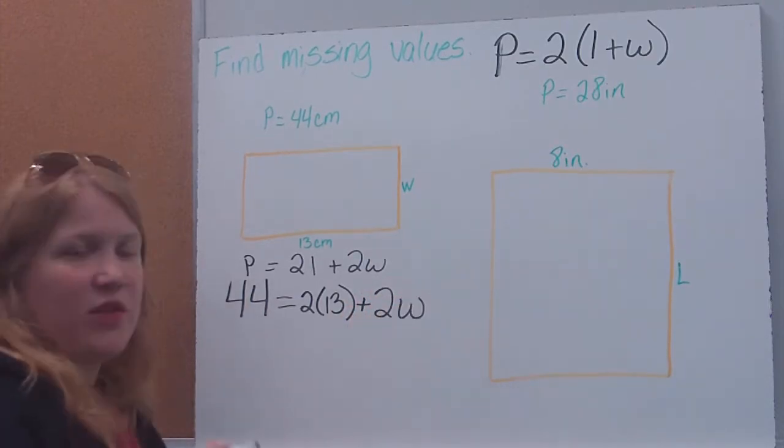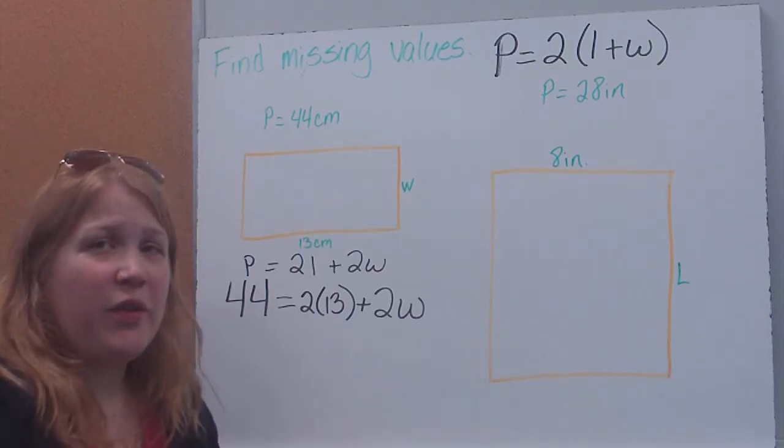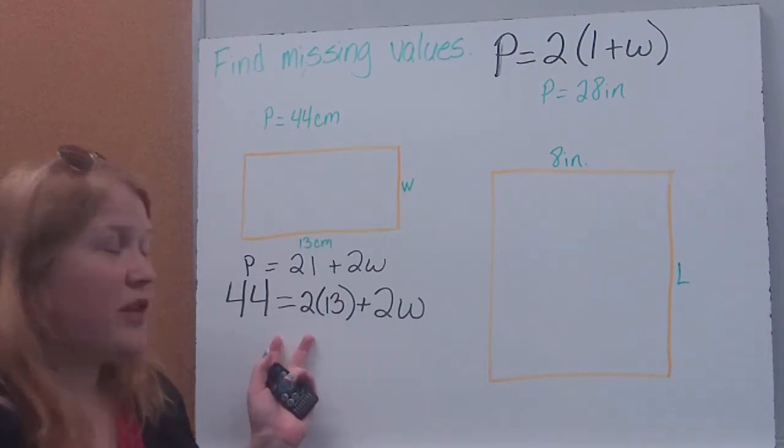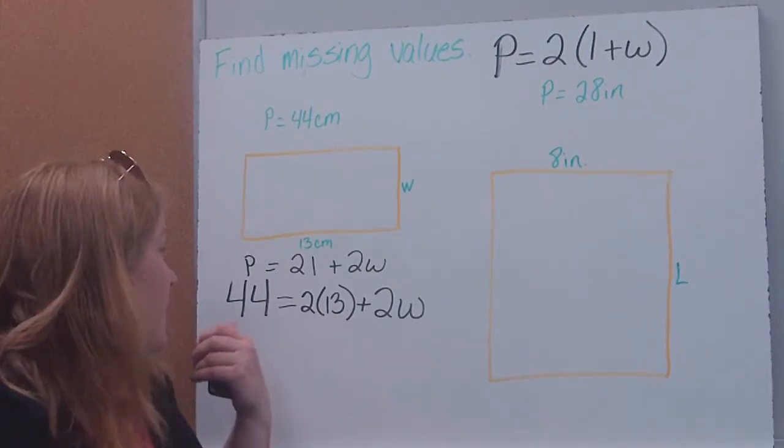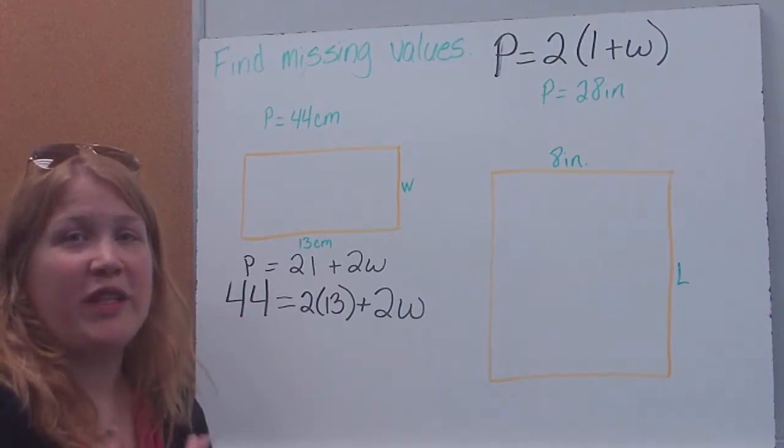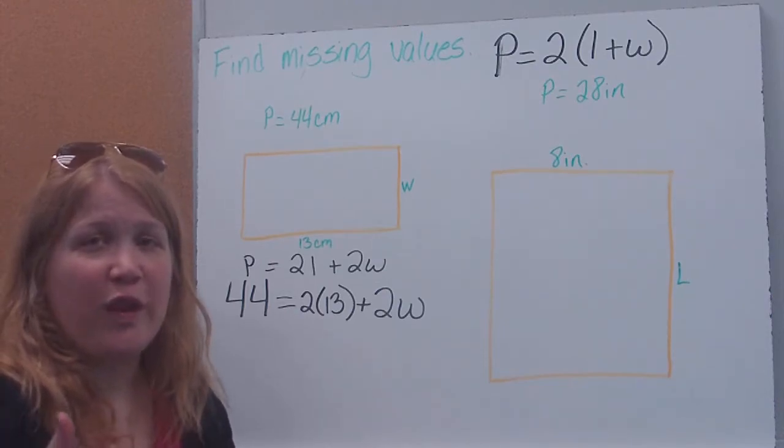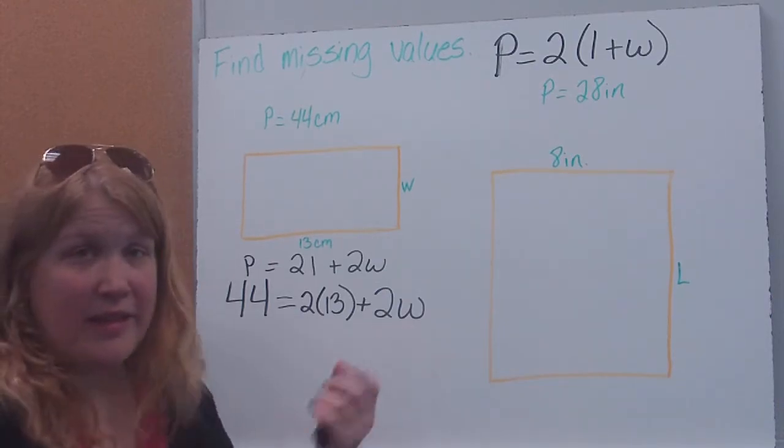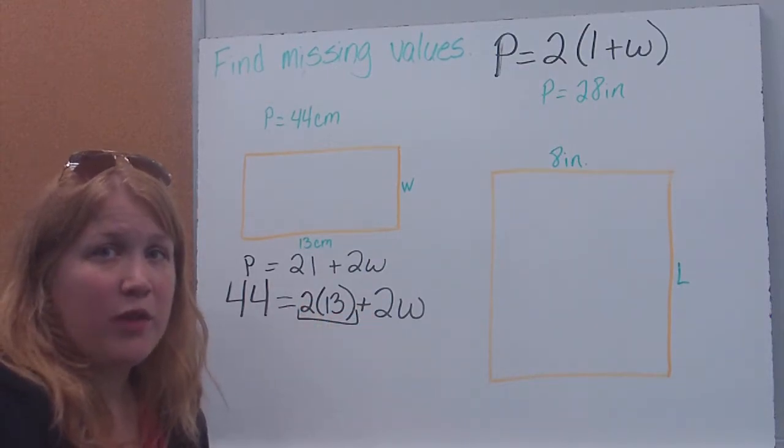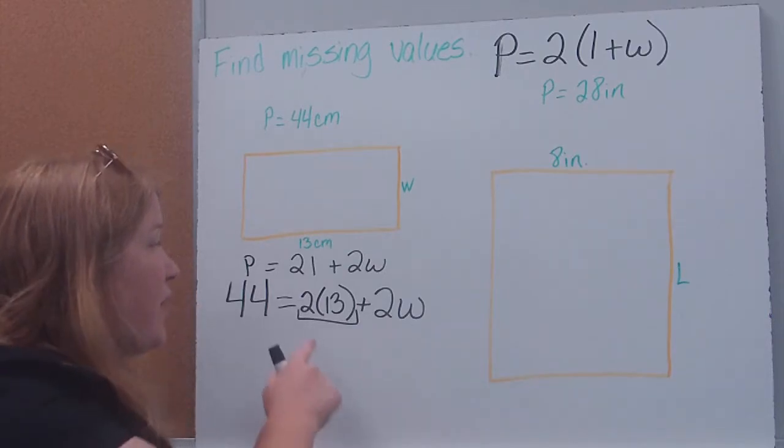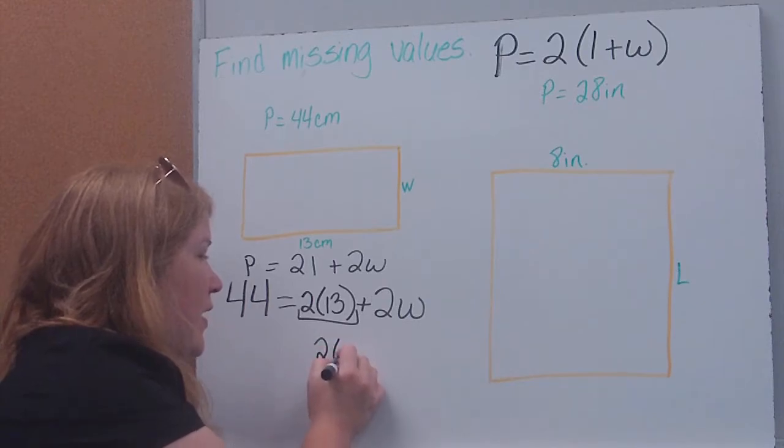And I don't know what the width is, so I'm just going to leave my variable as a W for the width. So what you'll notice now is we have something, and this actually looks very much like a two-step equation, which is exactly what it is. Rather than solving for the perimeter, we're going to undo our operations the way we did when we were talking about two-step equations to figure out what our missing width is in this case. So the first thing I'm going to want to do is wherever you have numbers that you can multiply to reduce them or to simplify, you're going to want to do that first. So 2 times 13 gives me 26.